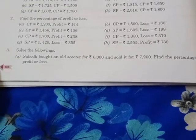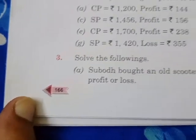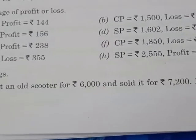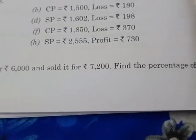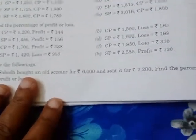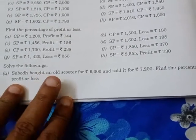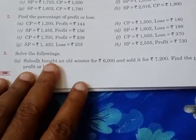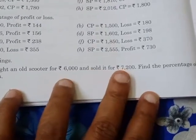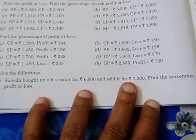Good morning, dear students. Today I will discuss Class 7 Maths from page number 166, number 3. Shubhad bought an old scooter for rupees 6,000 and sold it for 7,200. We need to find the percentage of profit or loss. The buying price or cost price is 6,000 and the selling price is 7,200. Since the selling price is more than the cost price, it is a profit situation.